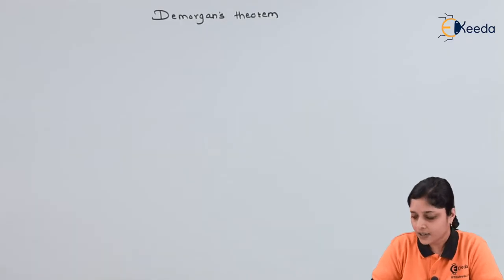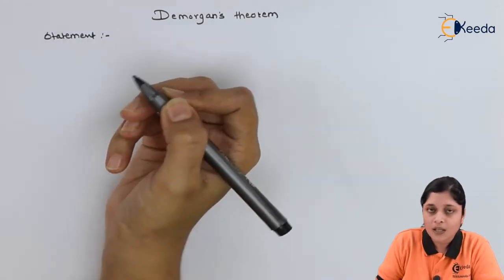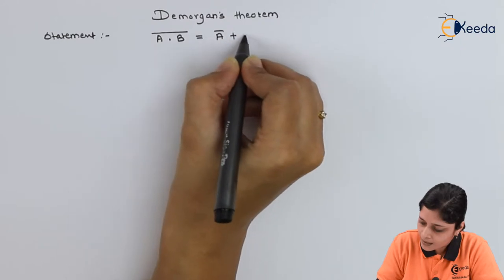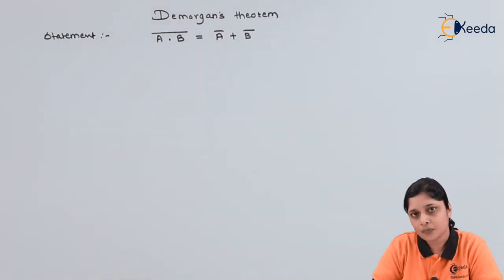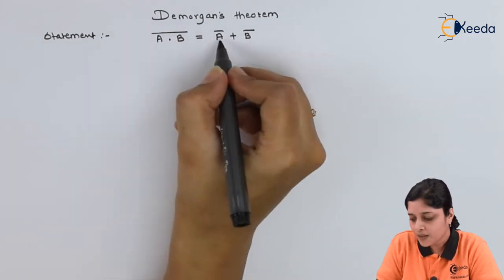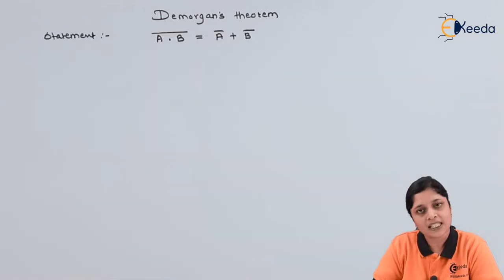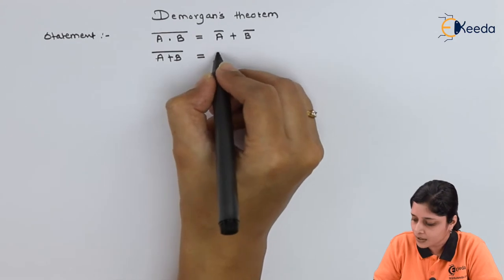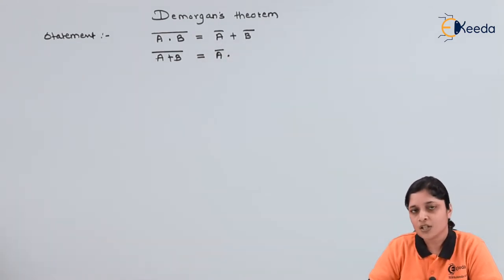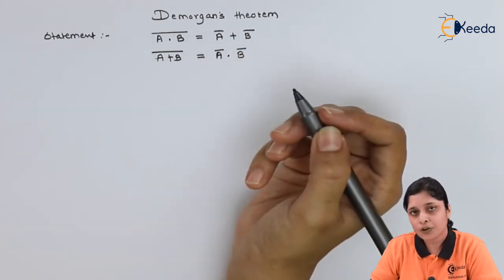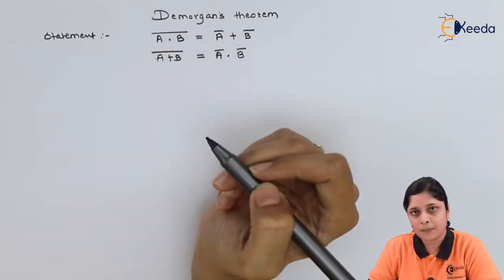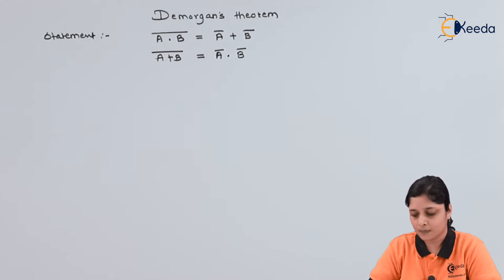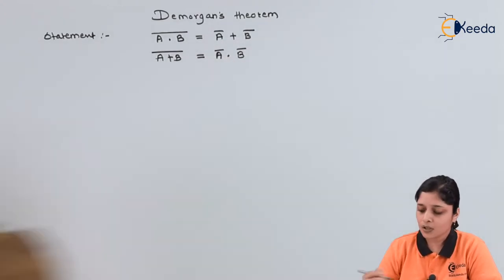De Morgan's theorem states that if you have two inputs A and B, then the complement of A dot B will be A-bar plus B-bar. This means the complement of the product of inputs equals the sum of the individual complements. Similarly, the complement of A plus B gives A-bar dot B-bar. So dot is replaced by plus, plus is replaced by dot, and individual complements are taken.